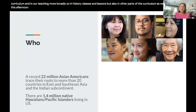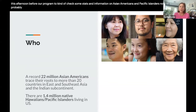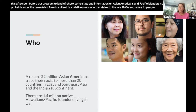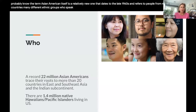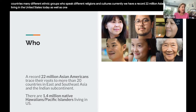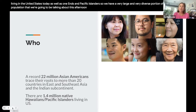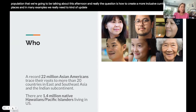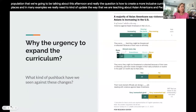I looked up some stats and information on Asian Americans and Pacific Islanders before our program. As many of you probably know, the term 'Asian American' is a relatively new one dating to the late 1960s, referring to people from many different countries and ethnic groups. Currently, we have a record 22 million Asian Americans living in the United States today, as well as 1.4 million Native Hawaiians and Pacific Islanders — a very large and very diverse portion of the U.S. population.